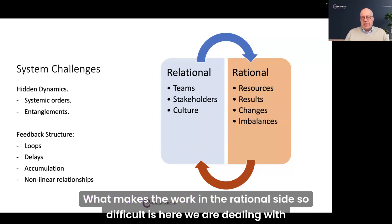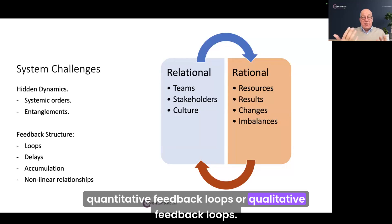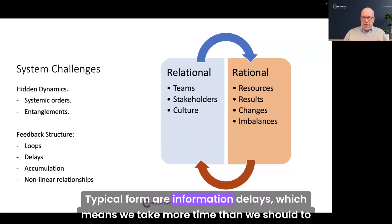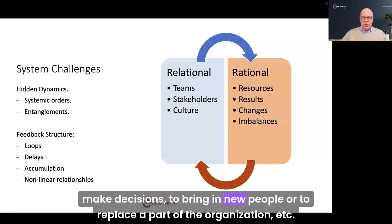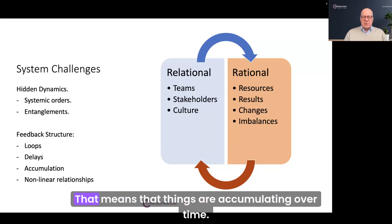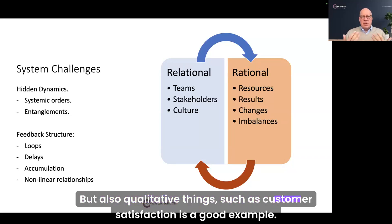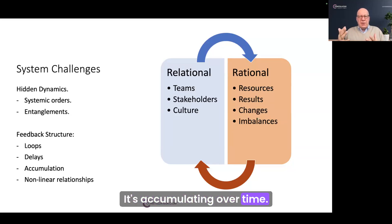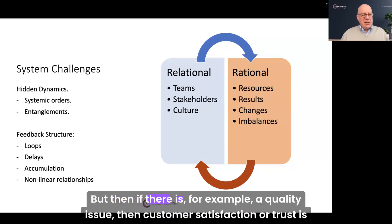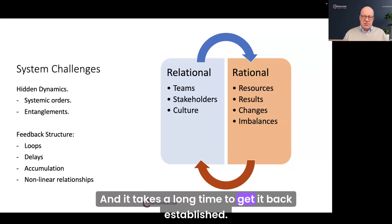What makes the work on the rational side difficult is that we're dealing with quantitative or qualitative feedback loops, and with delays. Typical forms are information delays — we take more time than we should to make decisions, bring in new people, or replace a part of the organization. We also deal with accumulation — things accumulate over time. Customer satisfaction is a good example: it accumulates over time with good experience, but if there is a quality issue, trust is eroded very quickly and it takes a long time to get it back.